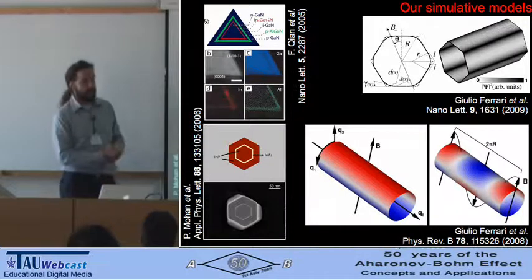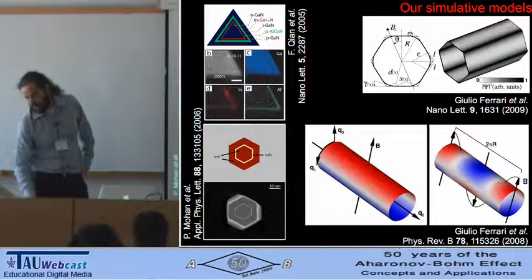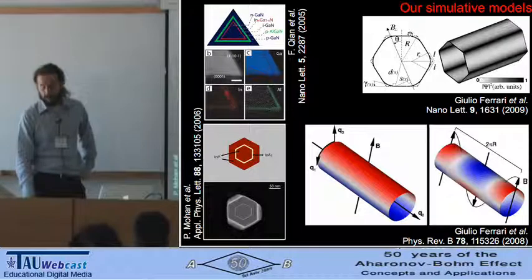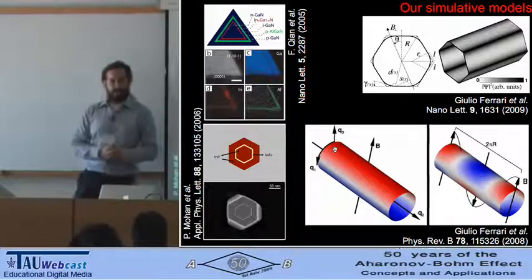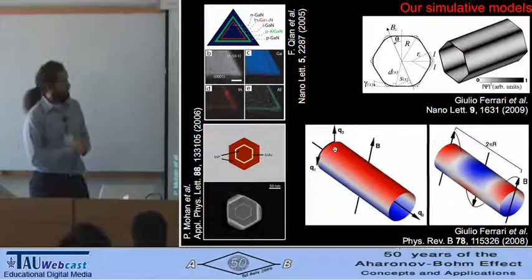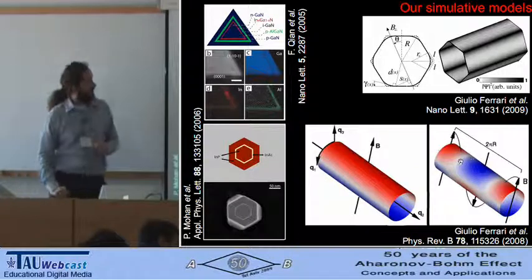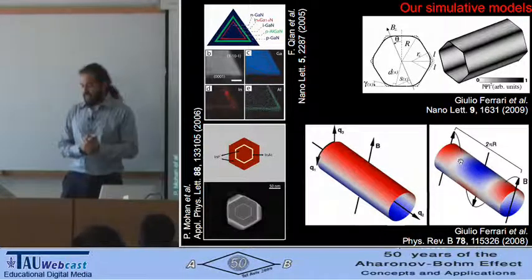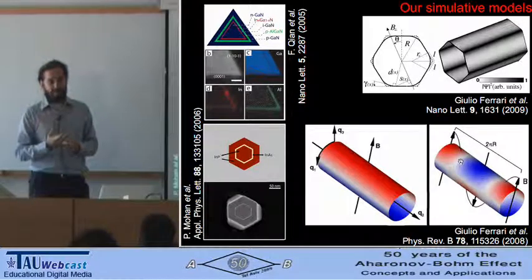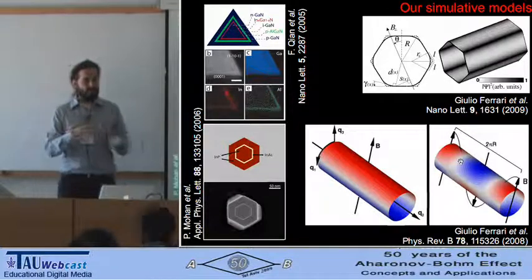Here are other examples of the same system, and here are two of our models. We have made a model for prismatic core-shell nanowires, but what I want to present today is something simpler — a cylindrical model — that allows us to apply both a homogeneous and a modulated magnetic field. These systems are important because the radius of the nanowires is on the order of tens of nanometers, giving them the right dimension to explore quantum effects.